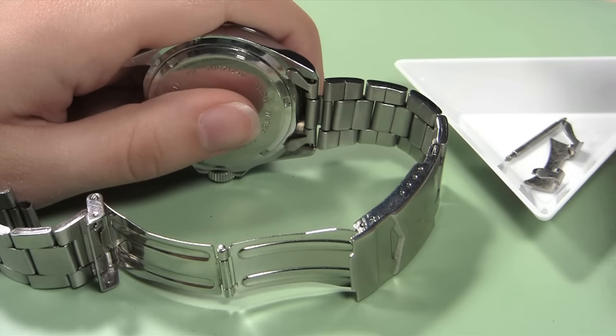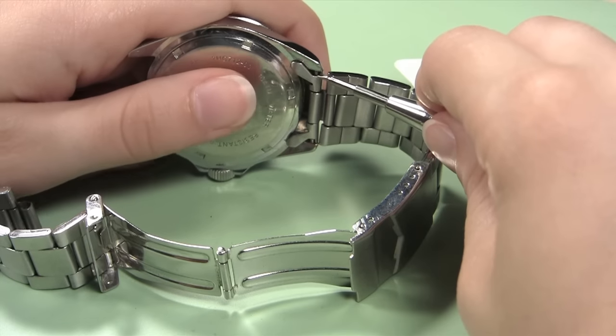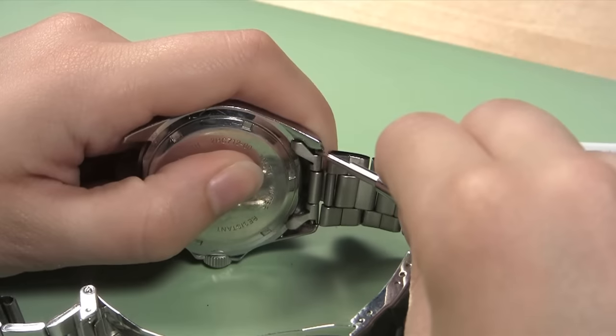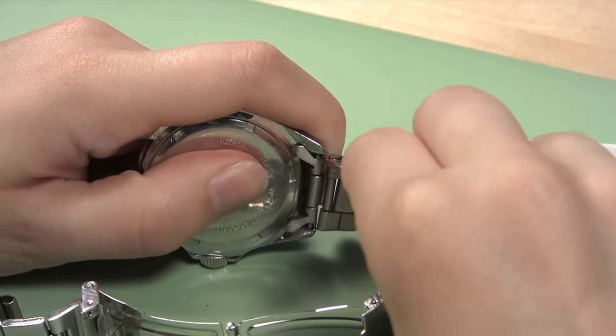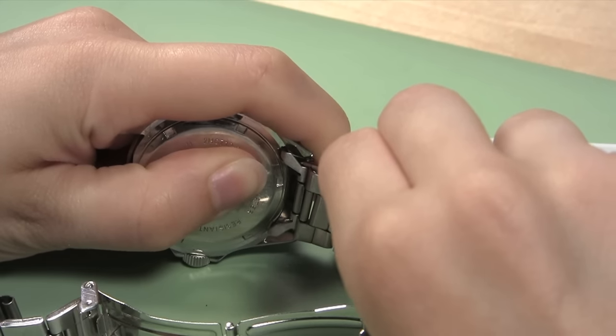Use your spring bar tool to repeat what you did before. Find the gap between the watch lug and the end piece and insert the forked end of your spring bar tool into it. Once the tool catches on the donut ring of the spring bar, push down and then to the side to slide the spring bar out from under the watch lug.